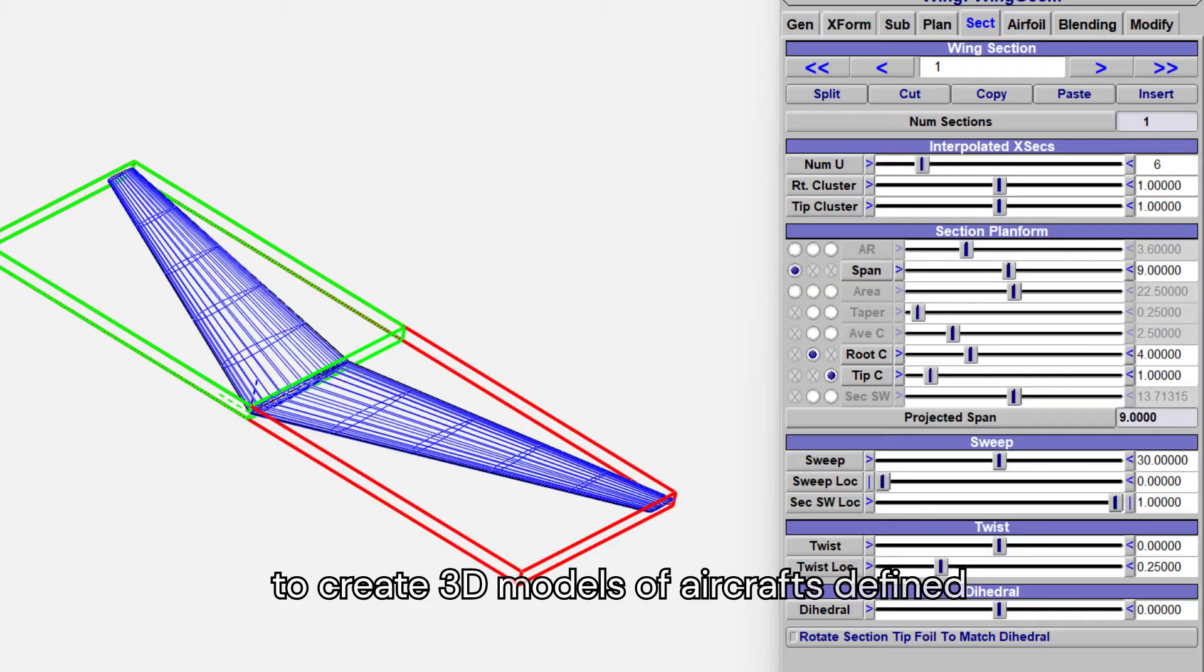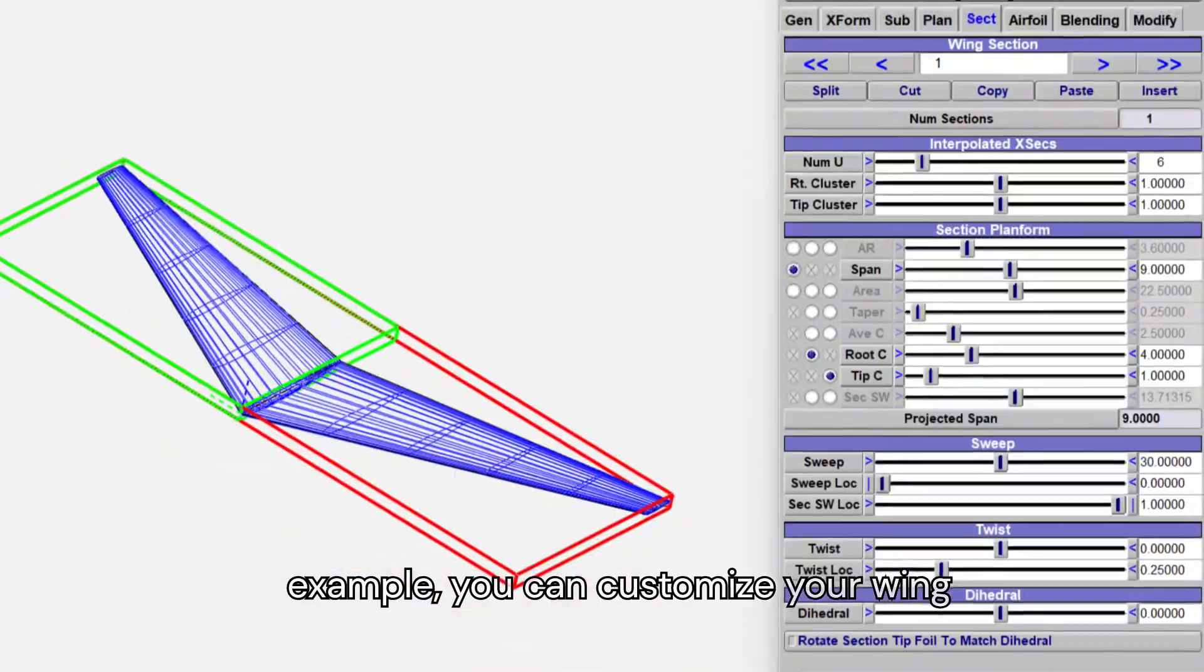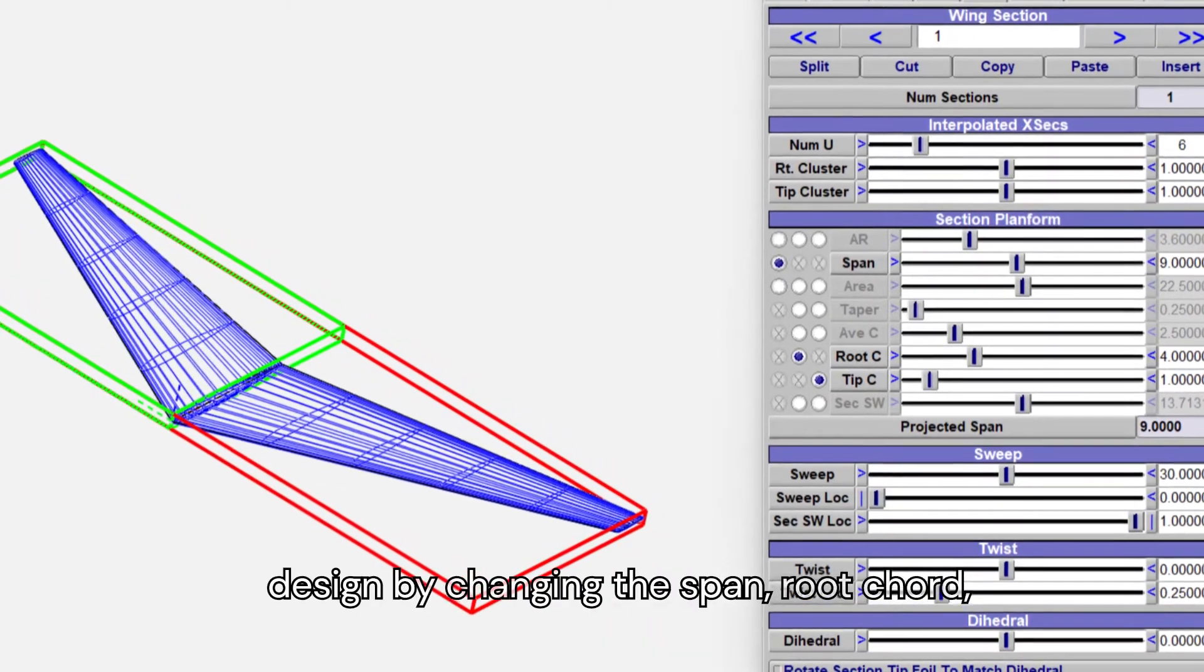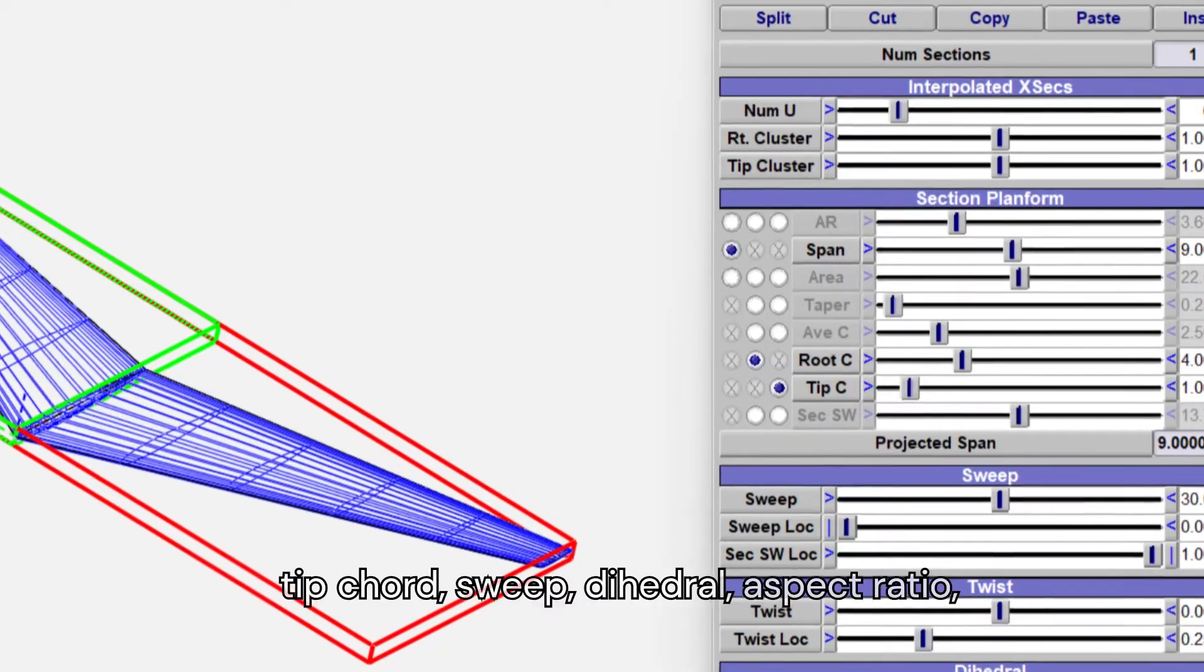It allows the user to create 3D models of aircraft defined by common engineering parameters. For example, you can customize your wing design by changing the span, root chord, tip chord, sweep, dihedral, aspect ratio, and airfoil.